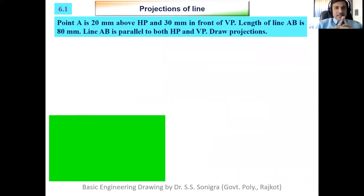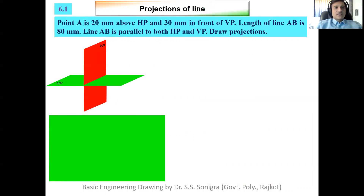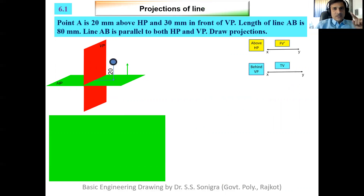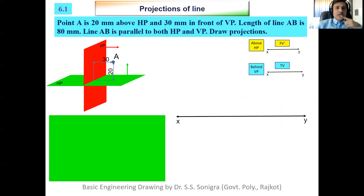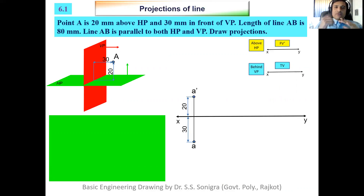Now for projections of lines. Given data: point A is 20 mm above HP and 30 mm in front of VP. Point A is above the HP at 20 mm and in front of VP at 30 mm. On the drawing, mark point A' (A-dash) above the XY line at 20 mm — that is the front view — and point A below the XY line at 30 mm — that is the top view. A' and A are the two views of point A.